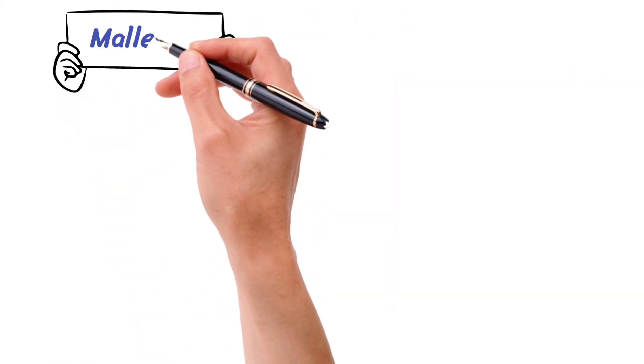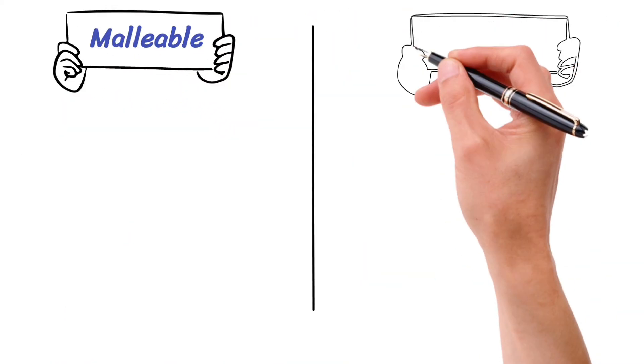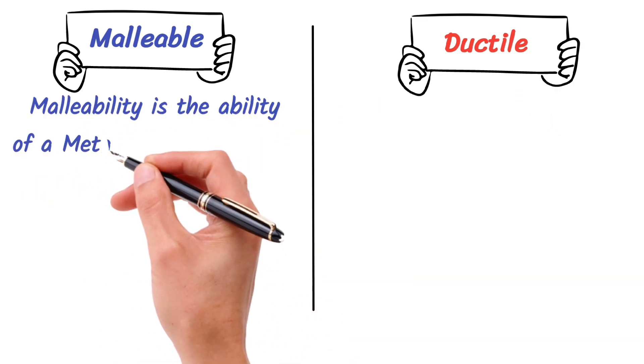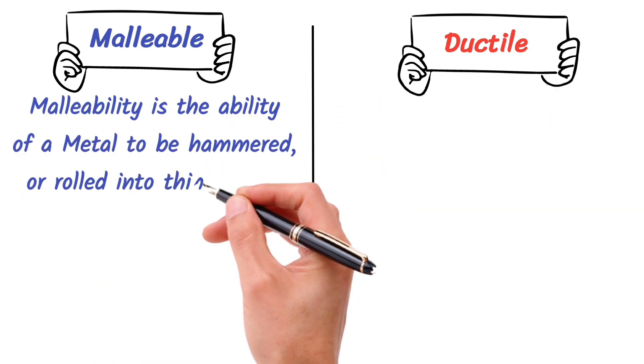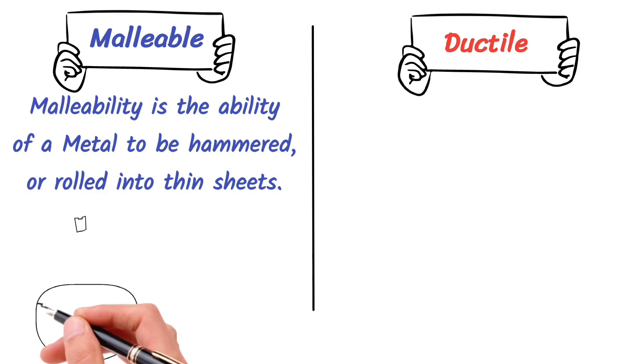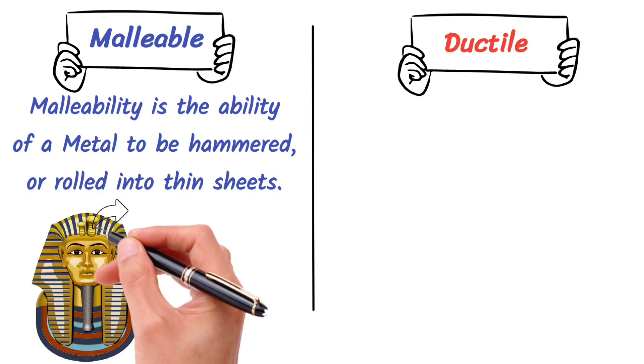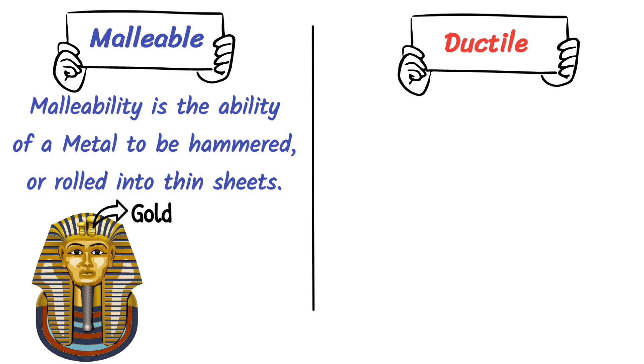Metals are malleable and ductile. What does it mean for a metal to be malleable? Malleability is the ability of a metal to be hammered or rolled into thin sheets. One of the most well-known examples of a malleable metal is gold. Gold is so soft and malleable that it can be easily shaped into jewelry and coins.